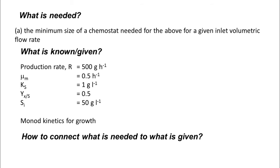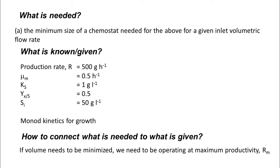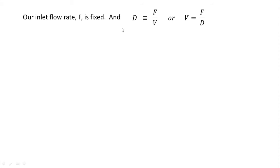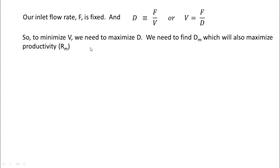Monod kinetics for growth is given. Now, how do we connect what is needed to what is given? If the volume needs to be minimized, we need to be operating at the maximum productivity Rm. If only the productivity is maximized can the volume be minimized. The inlet flow rate F is fixed, and the dilution rate D = F/V, so V = F/D. To minimize V, we need to maximize D, because when V is minimum for a constant F, D has to be maximum.